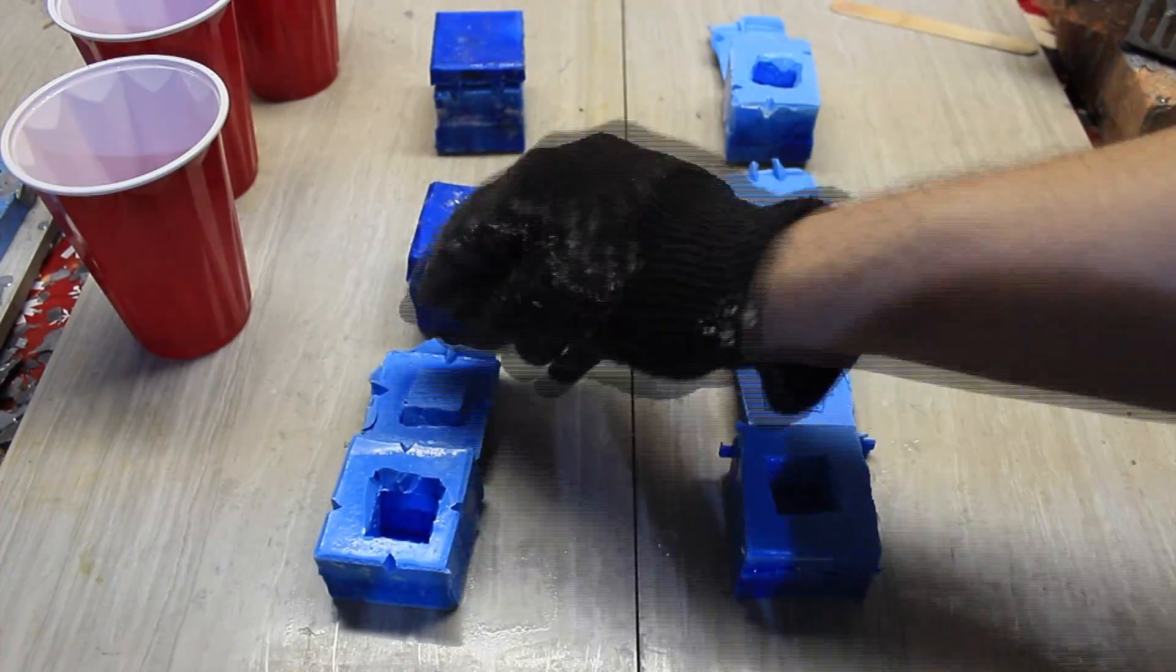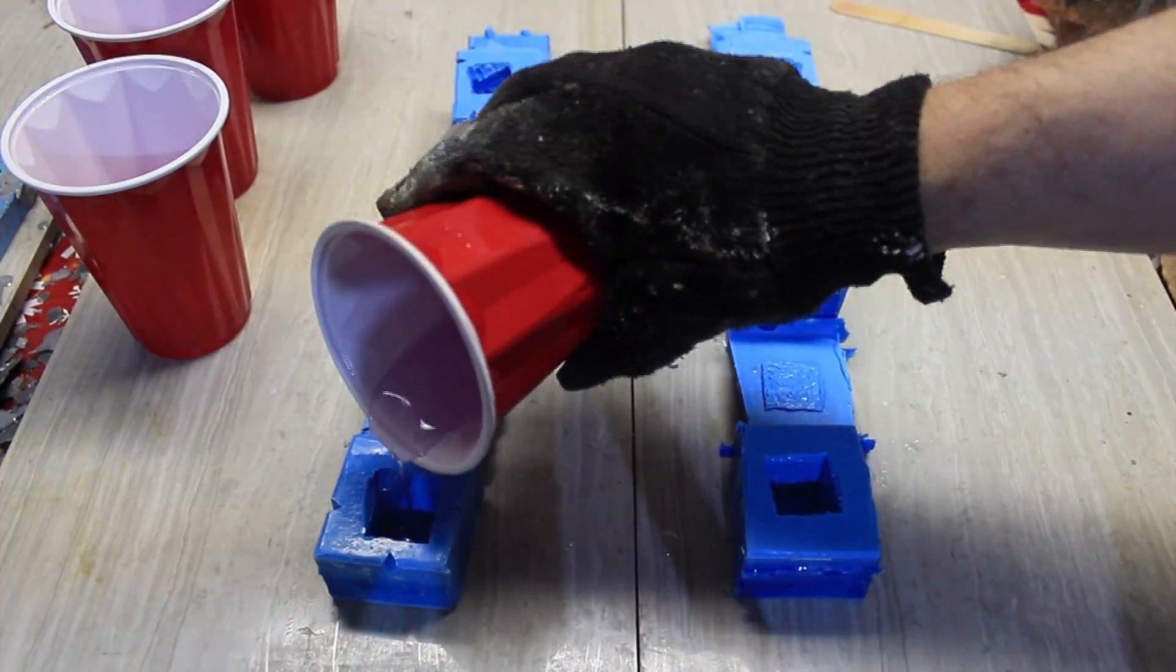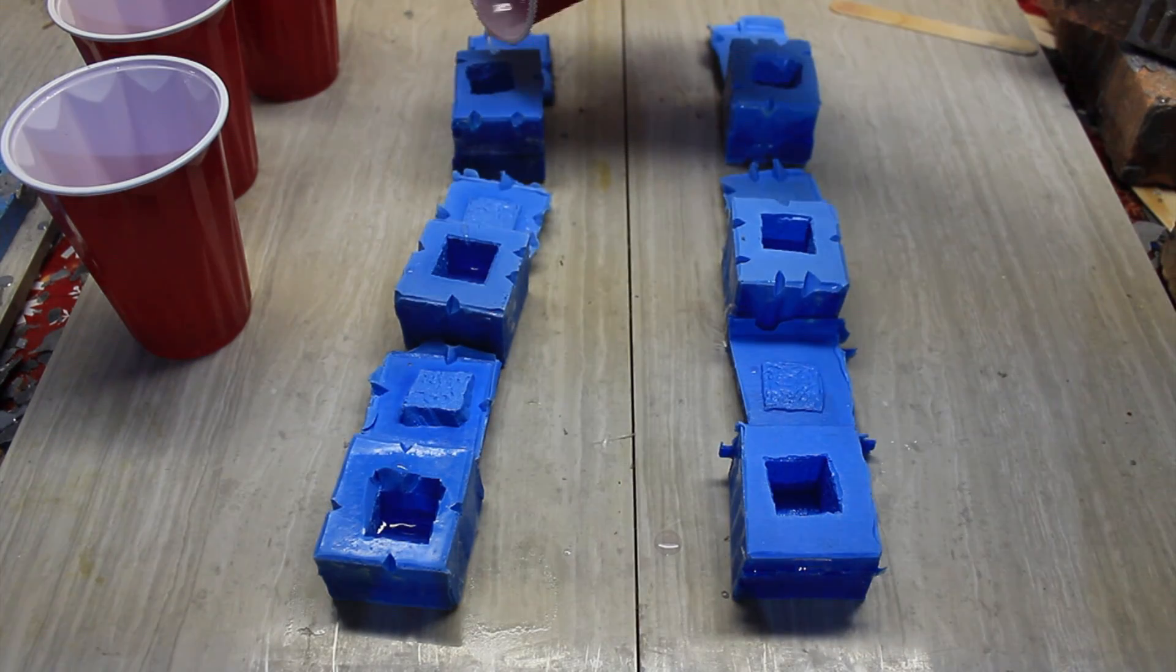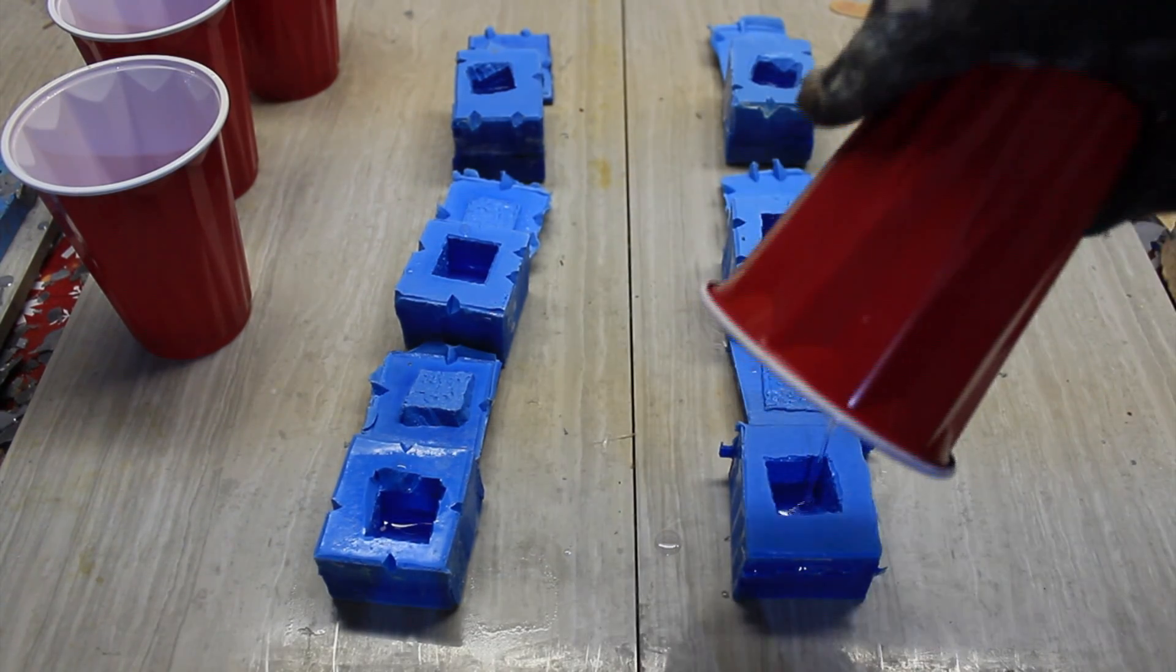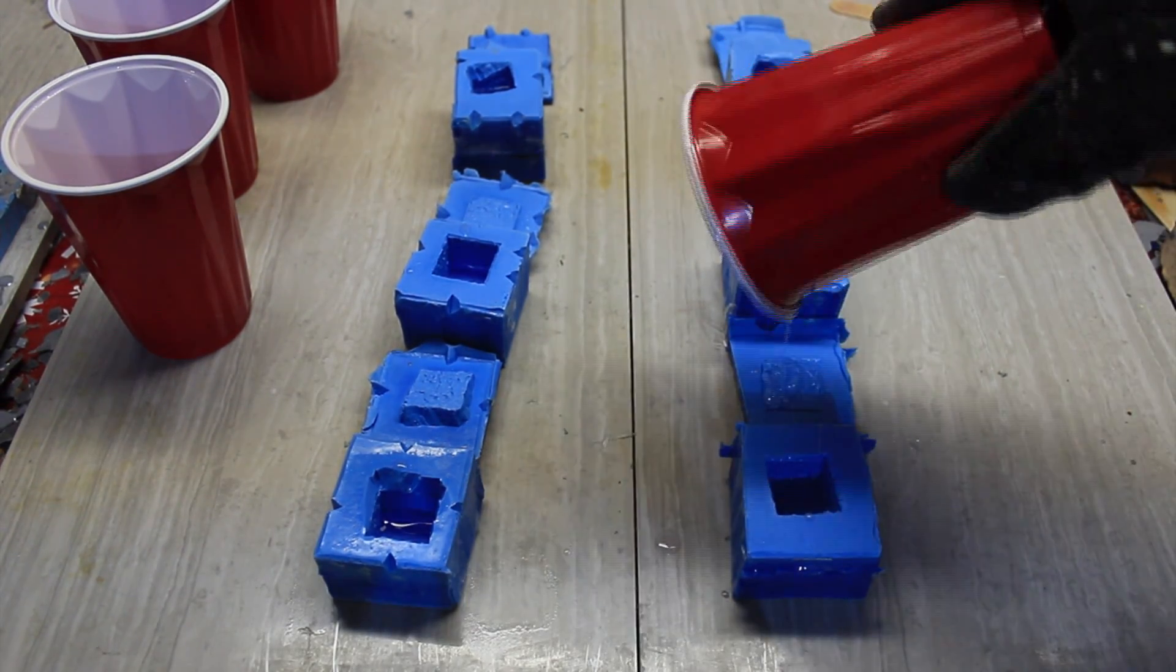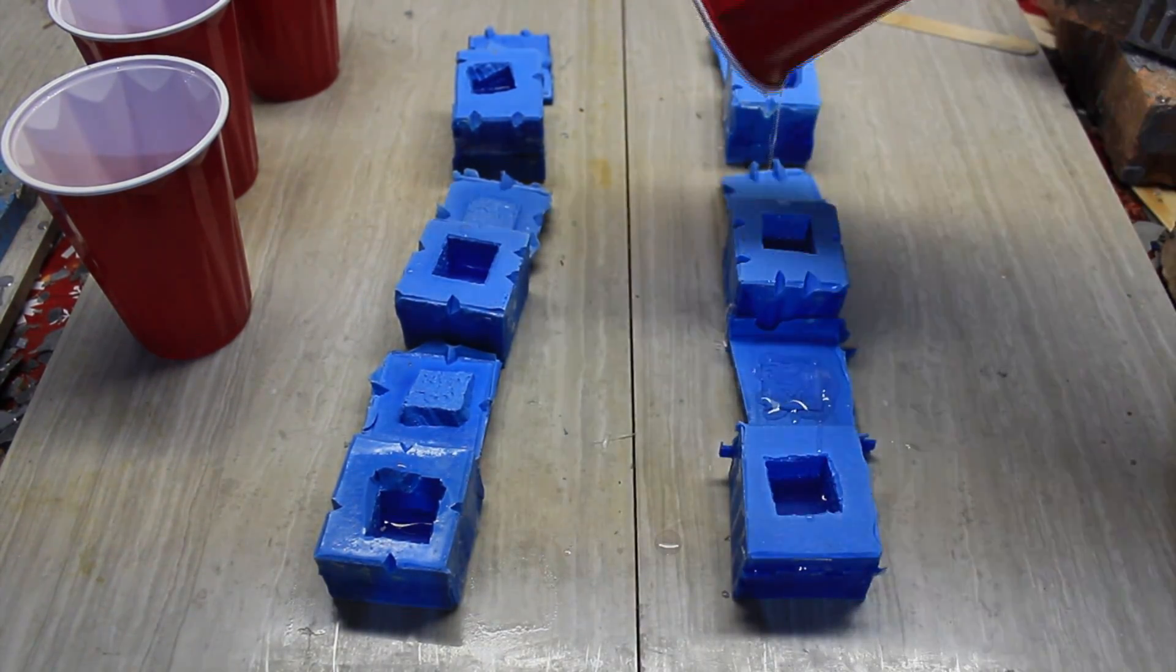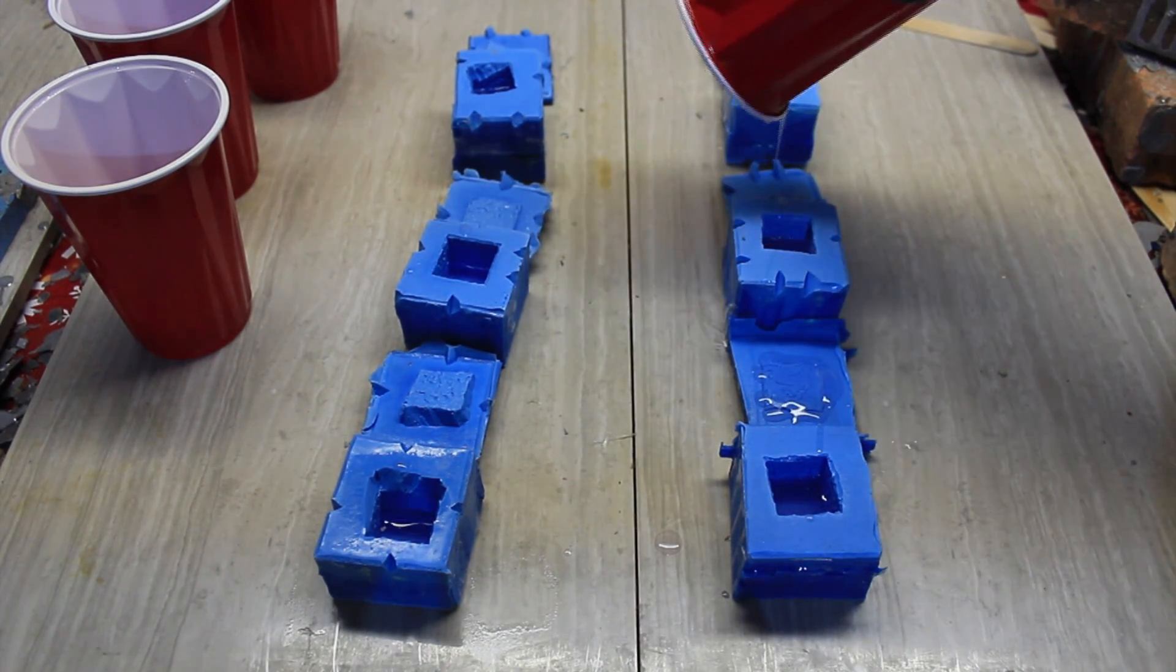We've lined up all the molds. The first step is to take your resin and pour enough to fill each mold about a quarter of the way up - not halfway, not all the way, just a little bit along the bottom.